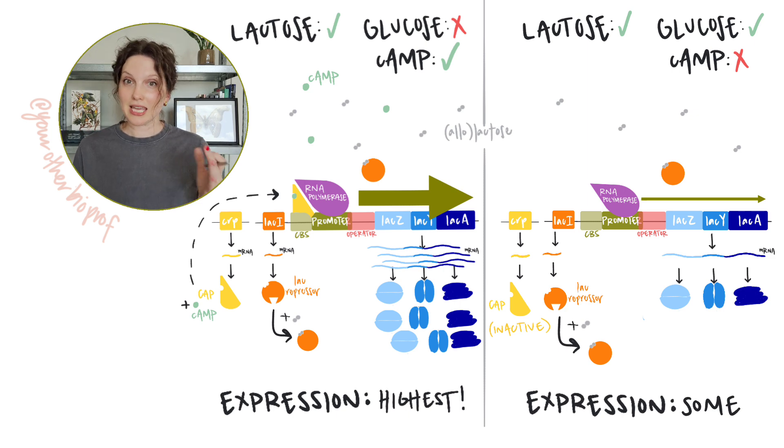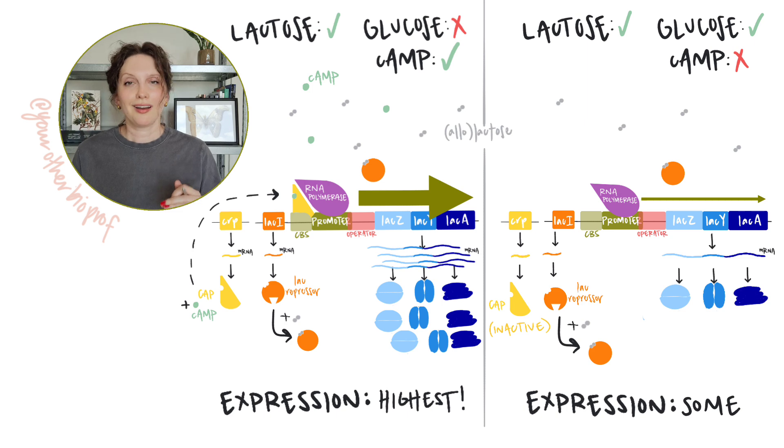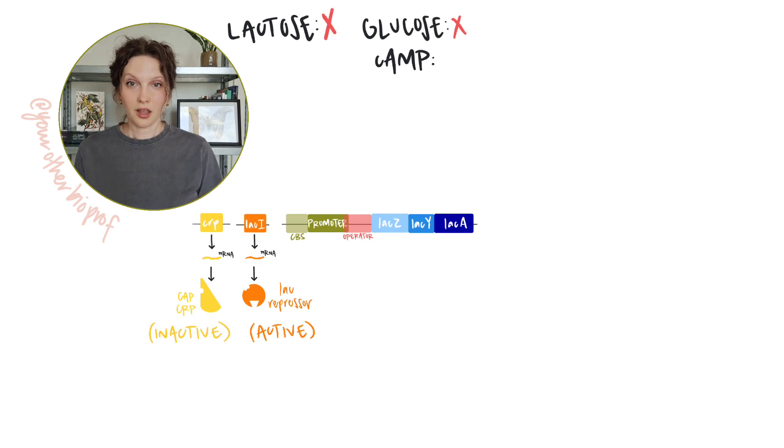So here transcription is happening, but the levels of transcription are much lower, not as low as the leaky levels that we'll see in just a bit, but not nearly as high as when you've got that CAP assist. And remember the reason for that, because the cell is focusing on glucose metabolism when glucose is available.